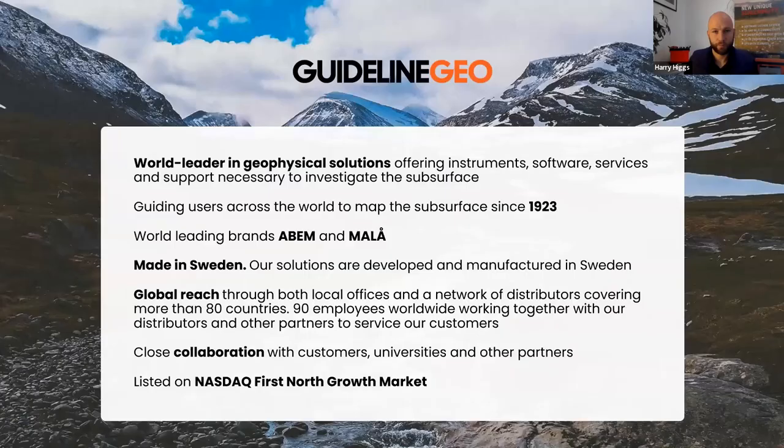First a word about the company. Guideline Geo design and manufacture ground-penetrating radar instruments under the Mahler brand and seismic resistivity and term instruments under the Abram brand. The office has a global reach through both local offices and a network of distributors covering more than 80 countries. There are 90 employees worldwide working together with our distributors and other partners to service our customers.